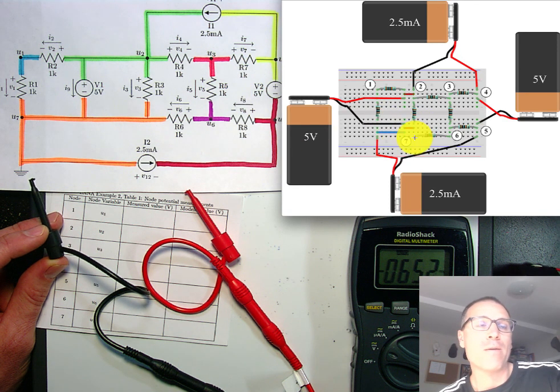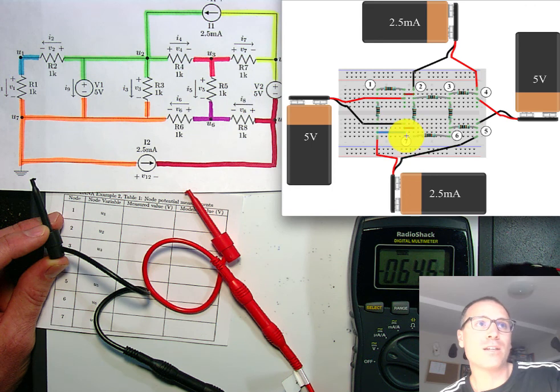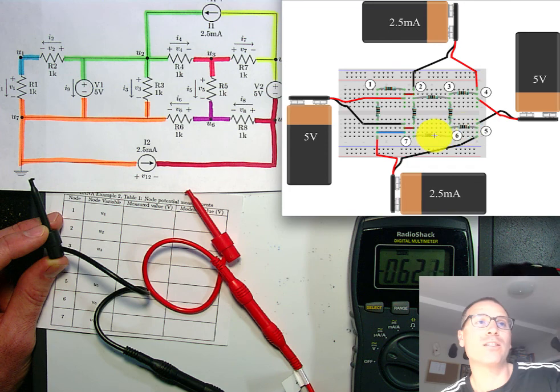So anywhere along that set of leads is node 7. Node 1 is here, node 2, node 3, node 4, node 5, node 6, node 7.